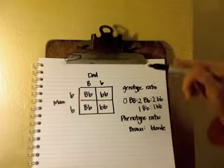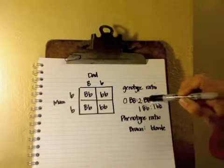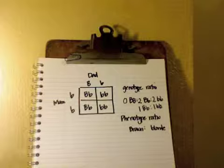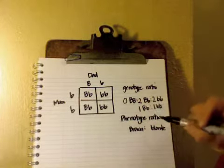But when you're asked for the genotype ratio, you have to be describing the letter combinations, the genes that those children received.